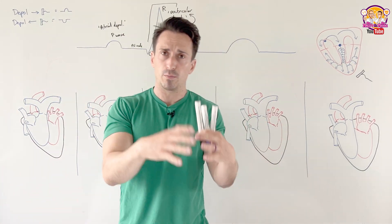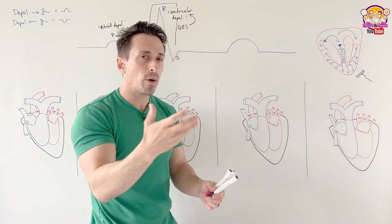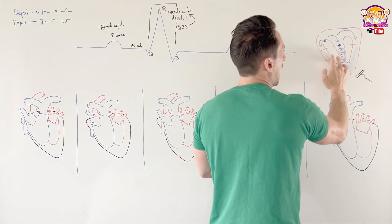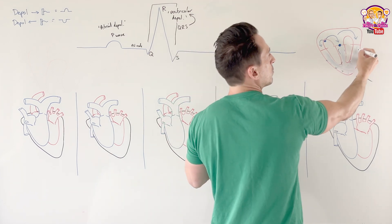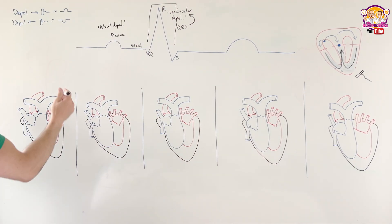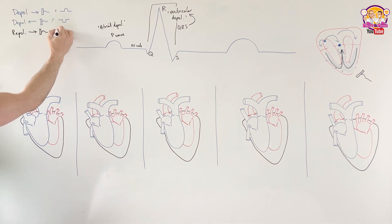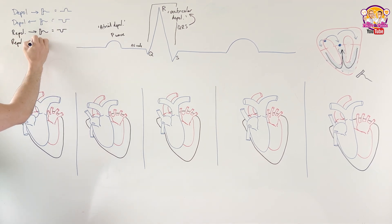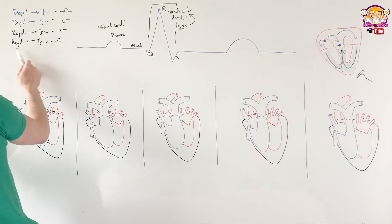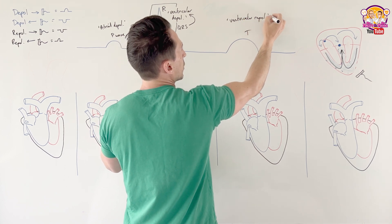Now everything's depolarized, and we need to reset the heart — we need to repolarize it. The repolarization event starts where it finishes and has a big wave that moves backwards. In this instance, repolarization is mostly away from the lead, so we get a bump up — we call that the T wave, which is representative of ventricular repolarization, the resetting of the heart.